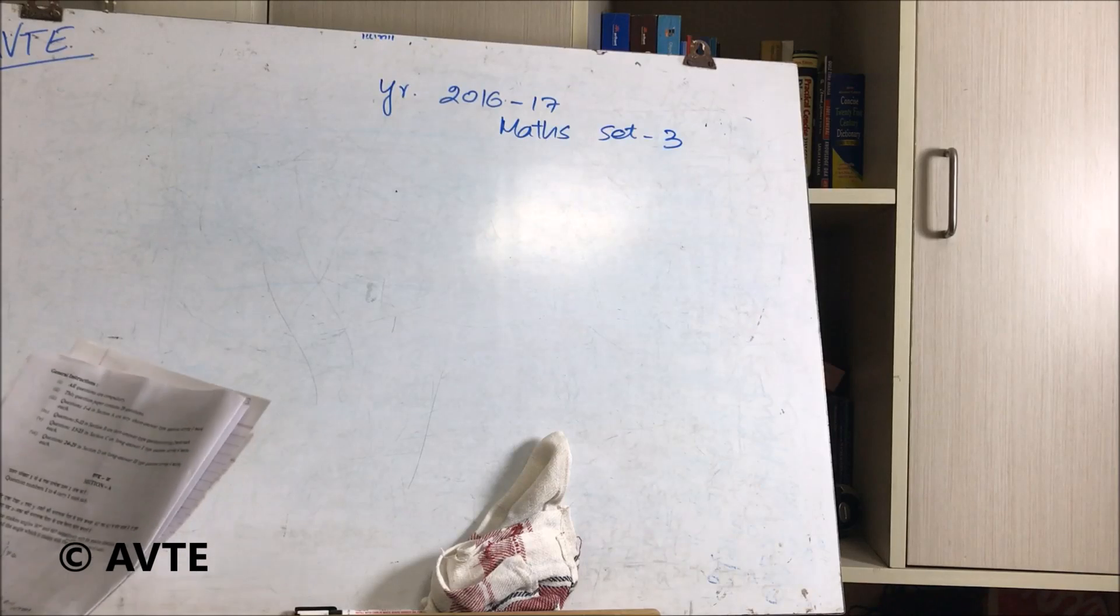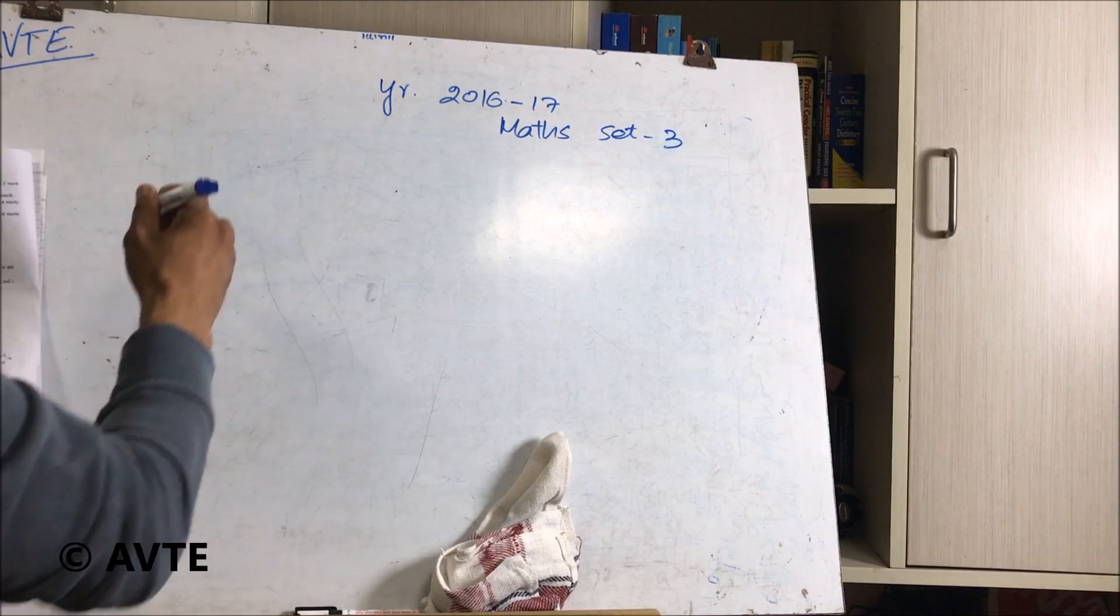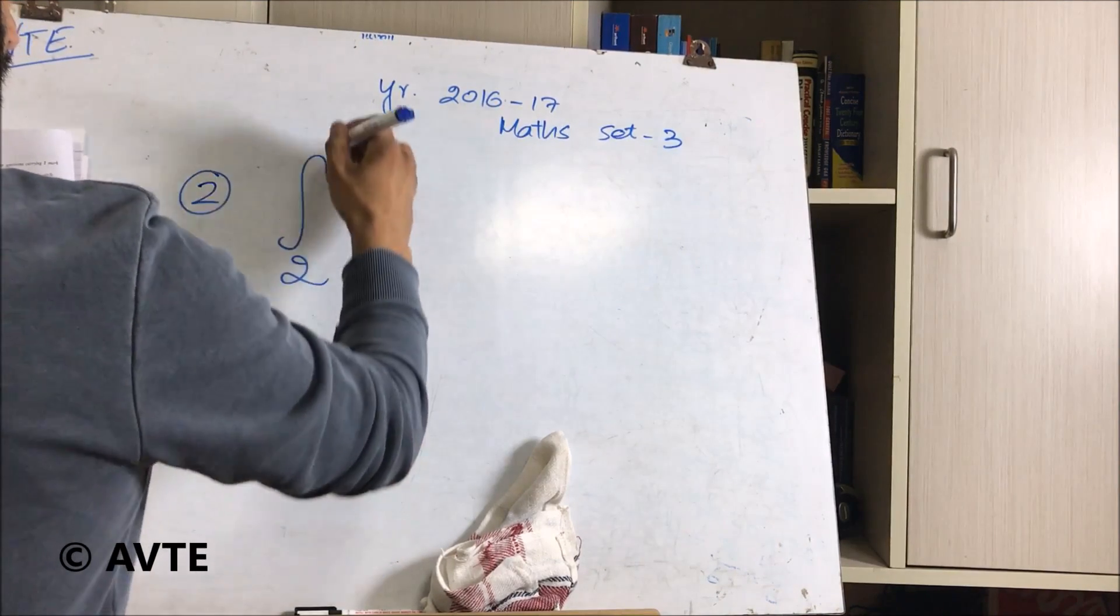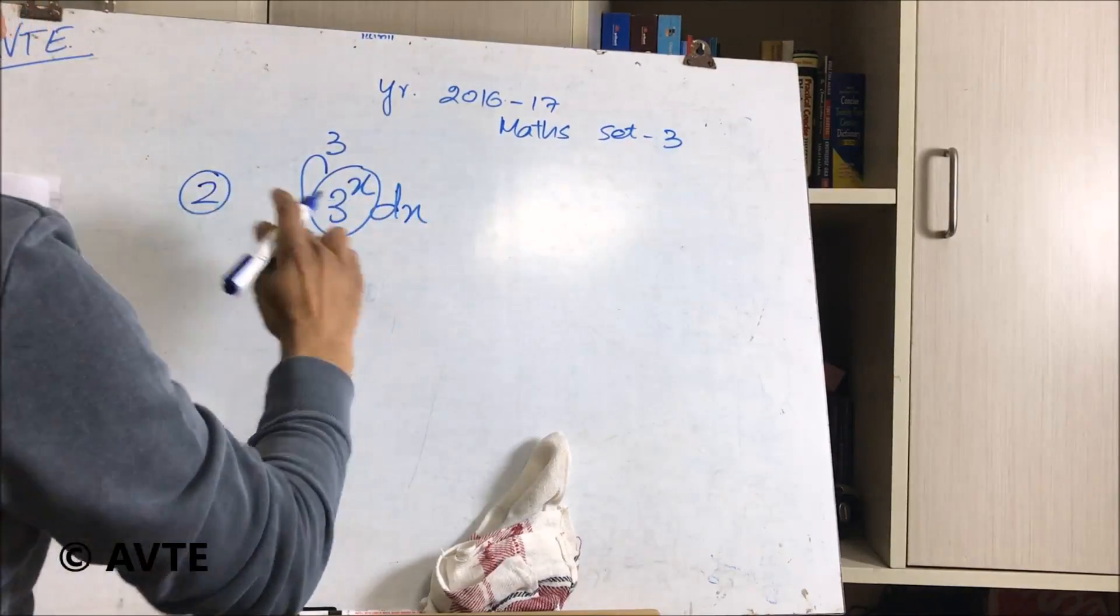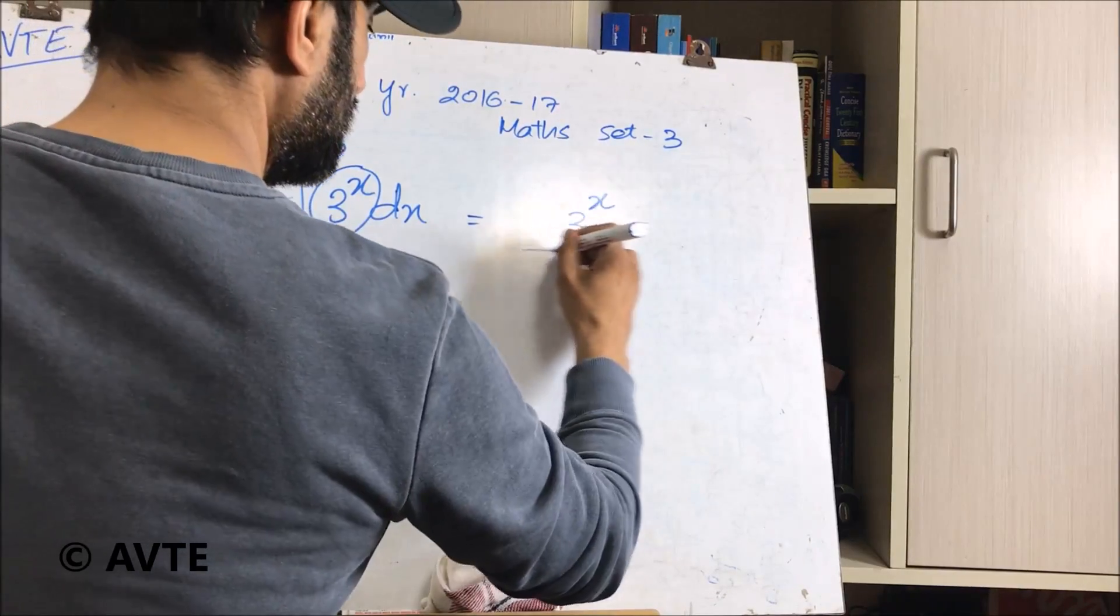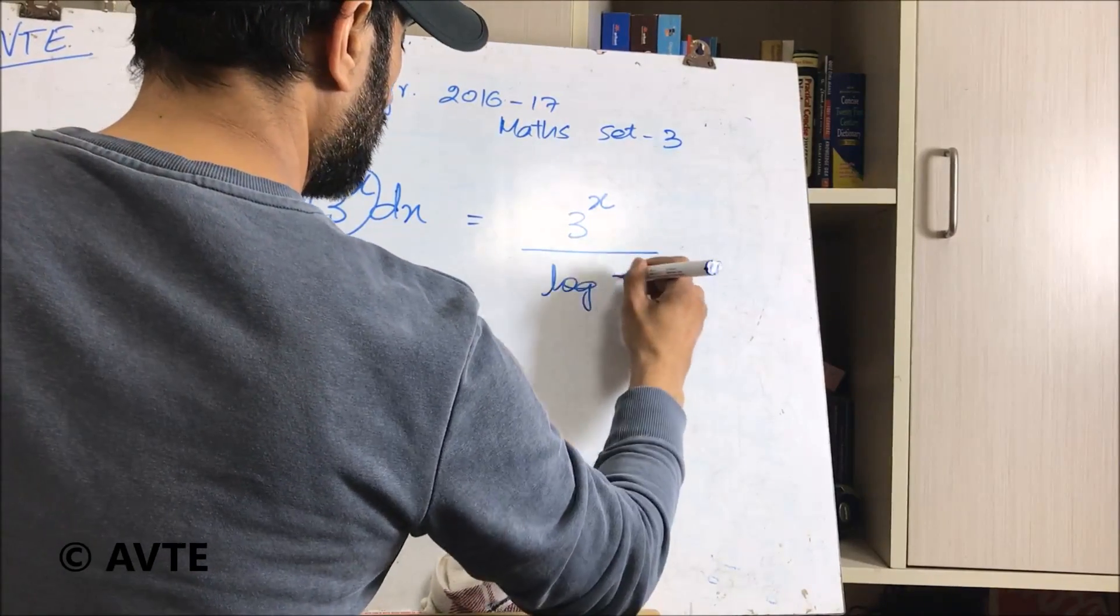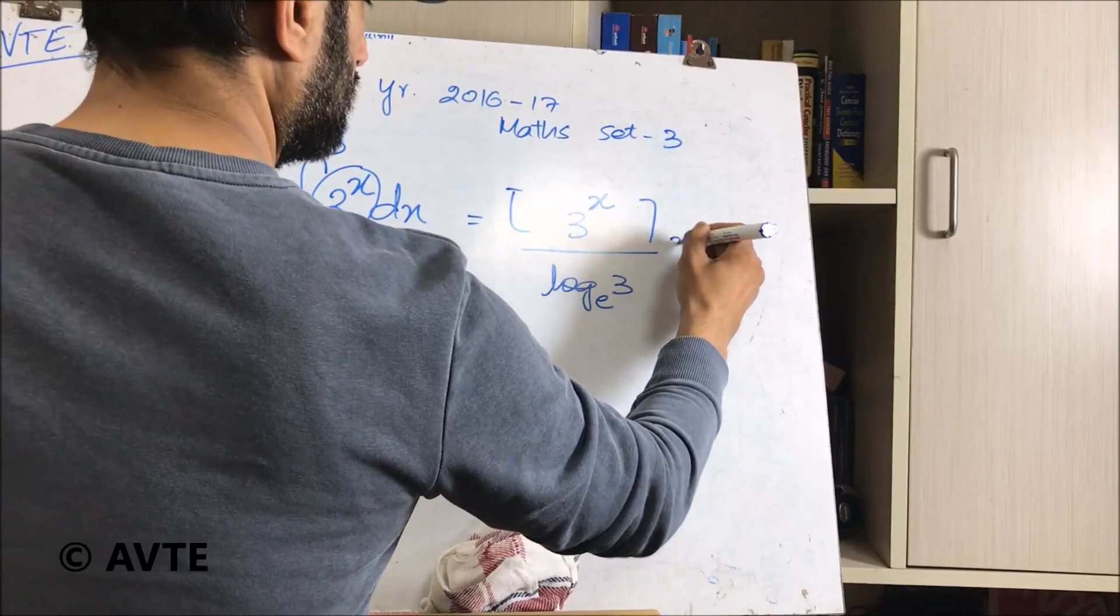Coming on to the solution of second question. This is an exponential function. So the integration of 3 raised to power x is 3 raised to power x divided by log 3 base e, and then we put the limits 2 to 3.